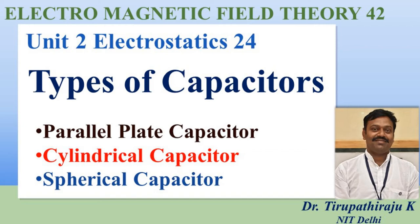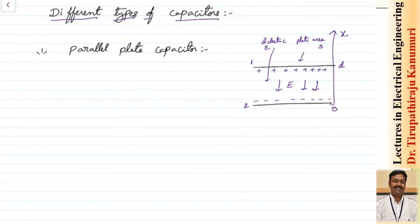Today we are going to discuss different types of capacitors based on their configuration. First, let us start with the parallel plate capacitor. Assume two plates, plate 1 and plate 2, are separated by a distance d along the x-axis. The dielectric medium between them has a permittivity of epsilon, and the plates have a surface area S. Since both plates are parallel, the electric field is produced from the positive plate to the negative plate.